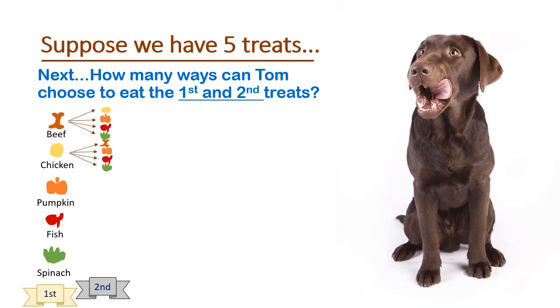Okay, so if he eats the chicken treat first, the only choices left for his second treat are the beef, the pumpkin, the fish, or the spinach. You get it. Basically, he has four choices after eating his first treat.